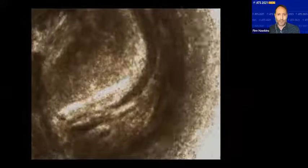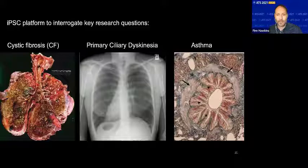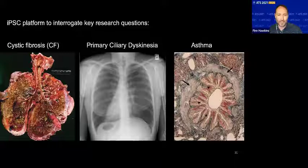That was a rapid review of the technology and the progress in deriving airway stem cells from iPSCs. I'm now going to change gears and focus on how we might use this technology to study chronic lung diseases — cystic fibrosis, primary dyskinesia, and asthma. Very different diseases with unique research challenges and questions. I'm not suggesting iPSC cells are the unique solution to these questions, but I do think there are select questions that the iPSC platform might be well suited to address within these disease fields.